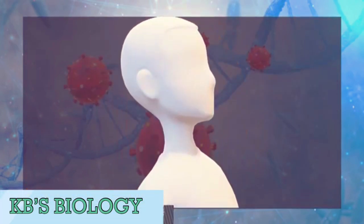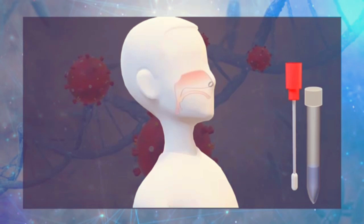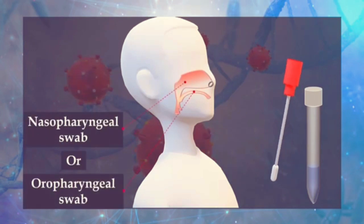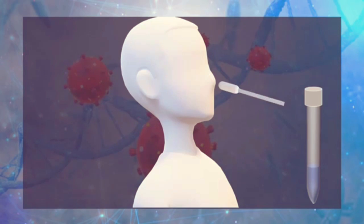To start a test, the samples can be collected by a nasopharyngeal swab or an oropharyngeal swab. For nasopharyngeal specimen, the swab is inserted in the nostril and gently moved forward into the nasopharynx, then it is rotated for a specified period time to collect secretions that contain the virus.